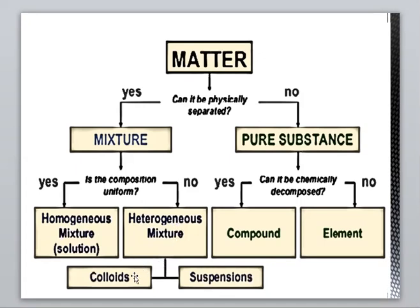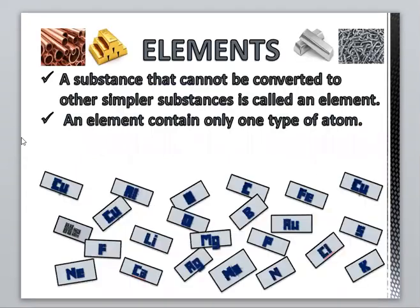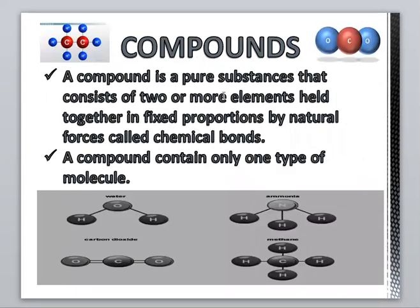A heterogeneous mixture is further subdivided into colloids and suspensions. Now, what is an element? A substance that cannot be converted to other simpler substances is called an element. An element contains only one type of atom.